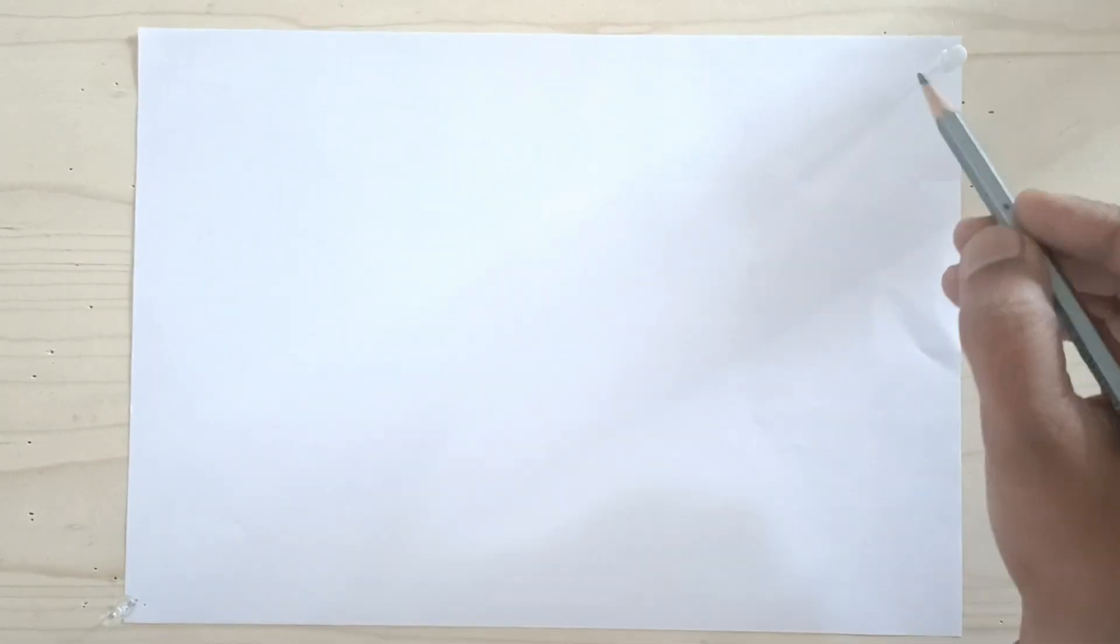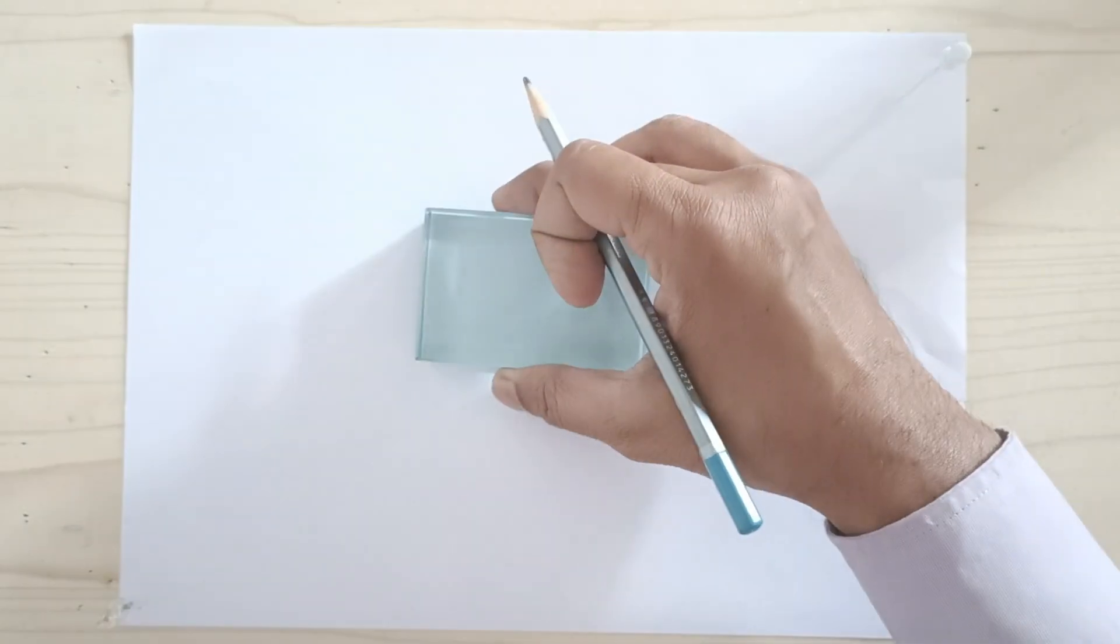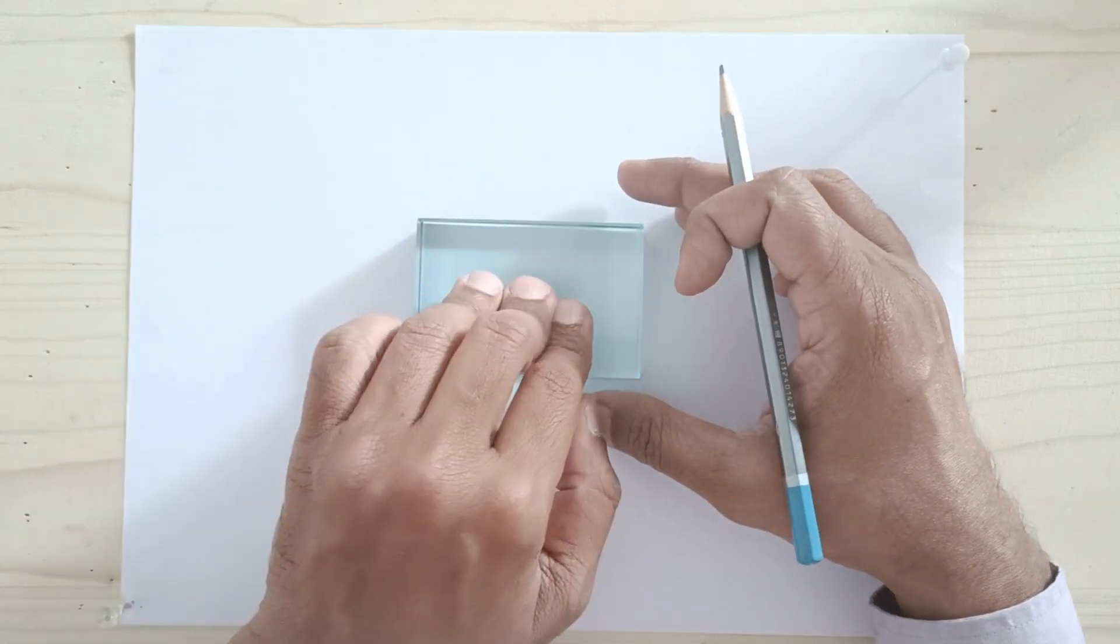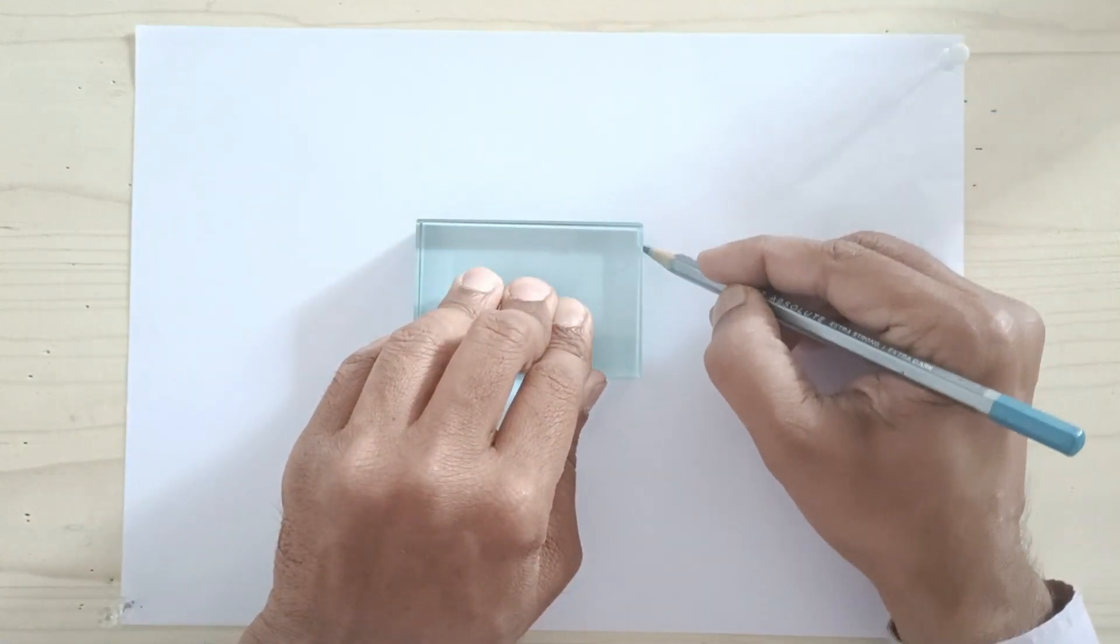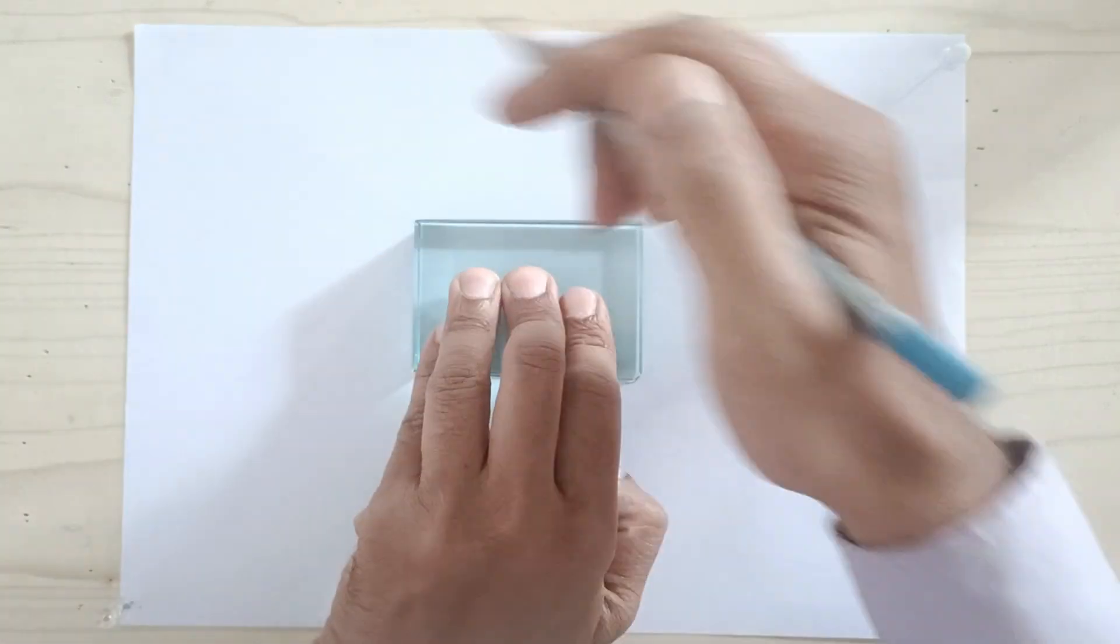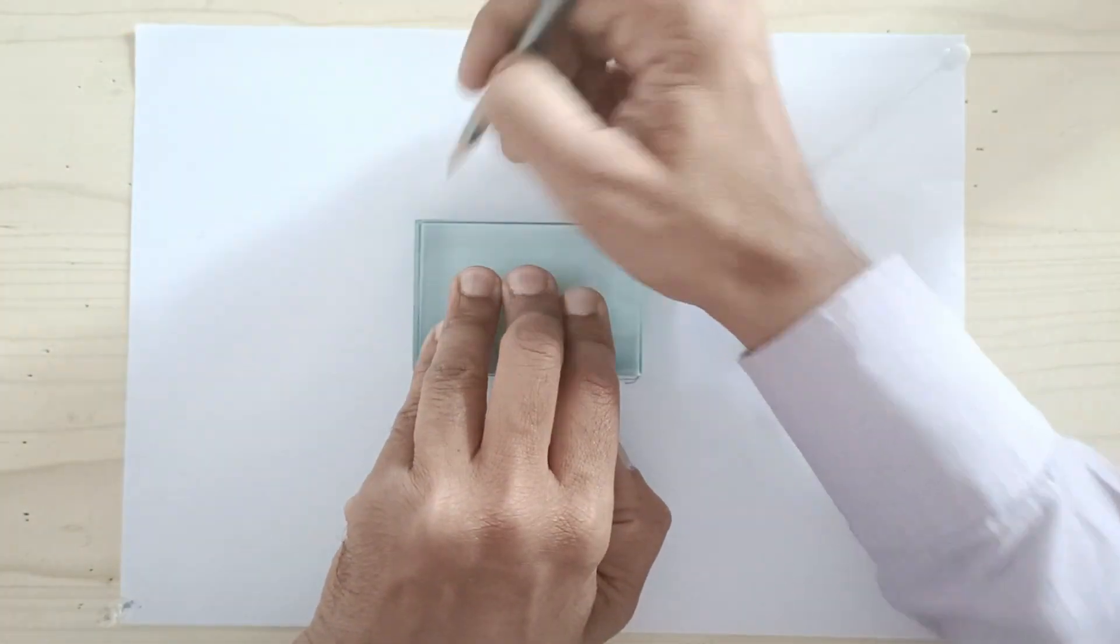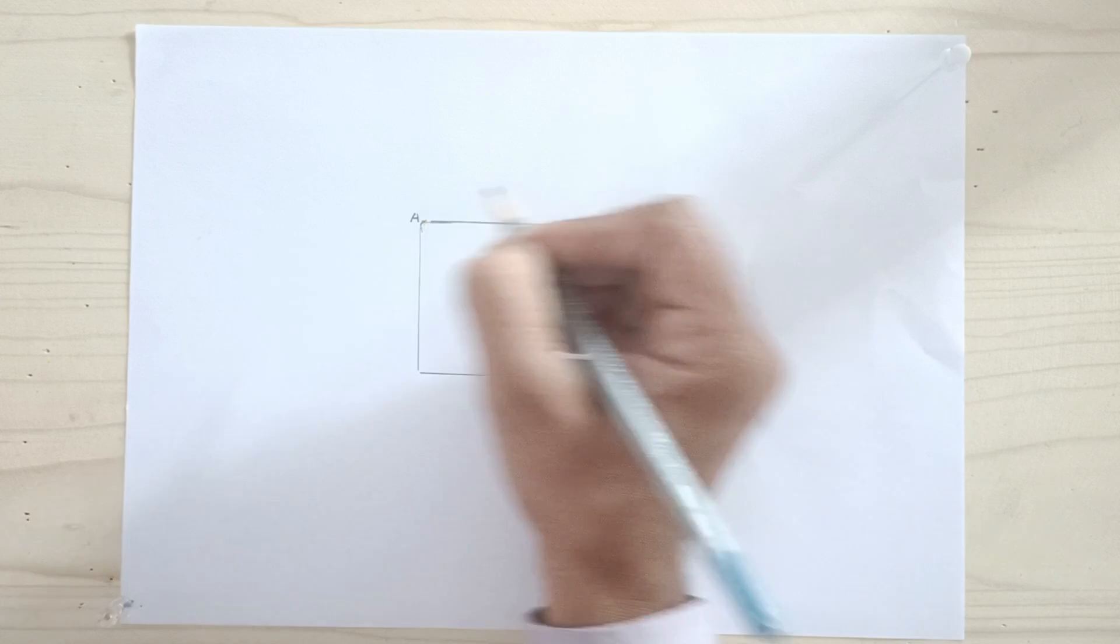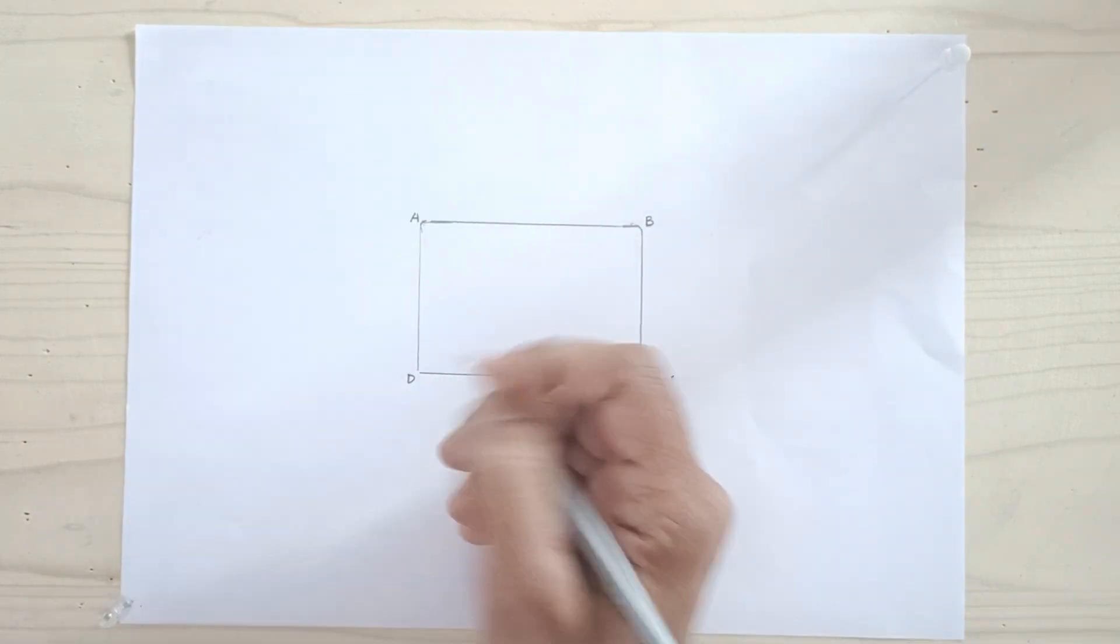Fix two softboard pins on diametrically opposite sides of A4 size paper on the wooden board. Place the glass slab at the center of the A4 size paper, hold it tightly and draw its outline using a pencil. Name the surfaces as ABCD.